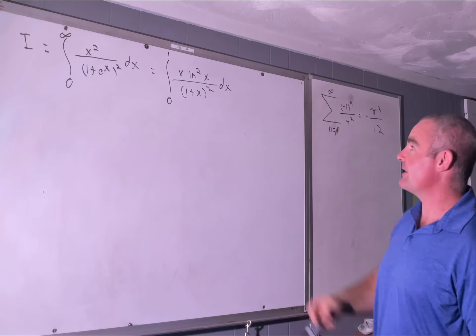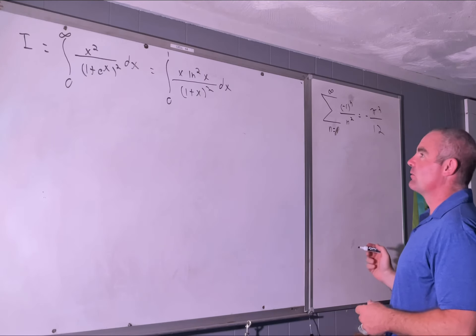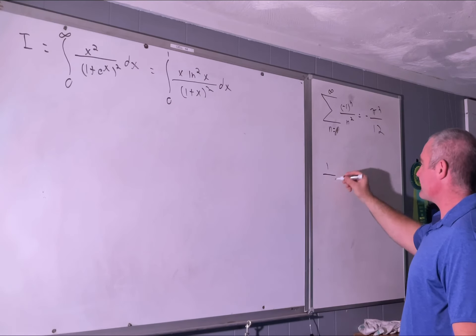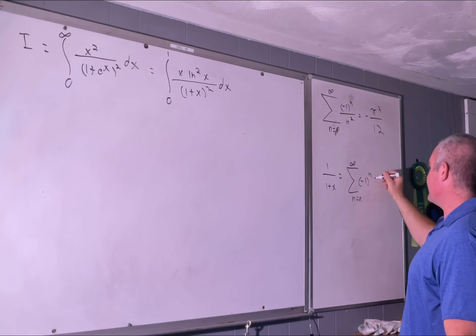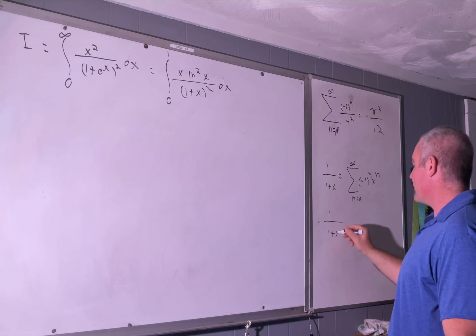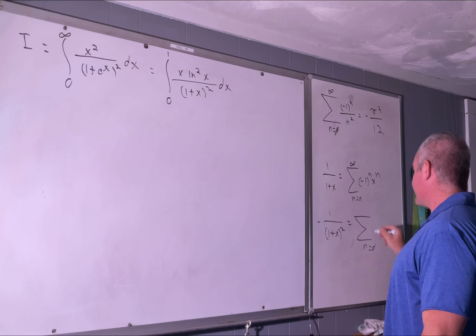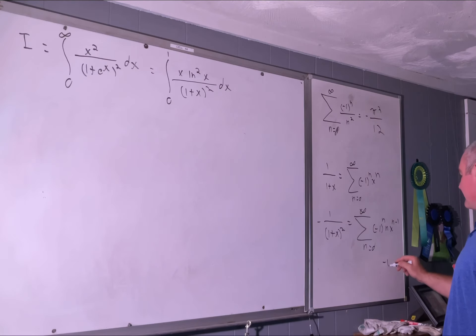So I equals this. Our first step is we want to find a summation representation for 1 over (1+x²). We know that 1/(1+x) equals the sum from n=0 to infinity of (-1)^n times x^n. Taking the derivative on both sides gives us -1/(1+x)² equals the sum from n=0 to infinity of (-1)^n times n times x^(n-1). And that's true on the interval (-1, 1).